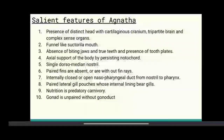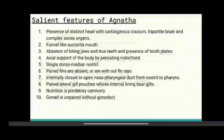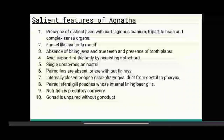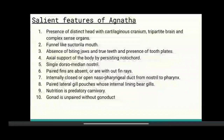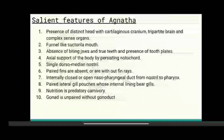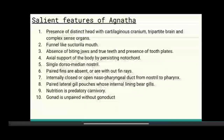Salient features of Agnatha: Presence of a distinct head with cartilaginous cranium, tripartite brain and complex sense organs. Funnel-like suctorial mouth. Absence of biting jaw and true teeth, and presence of tooth plates. Axial support of the body by persisting notochord. Single dorsal median nostril.